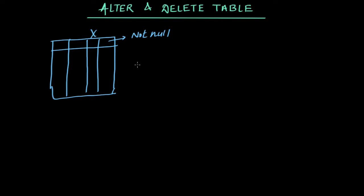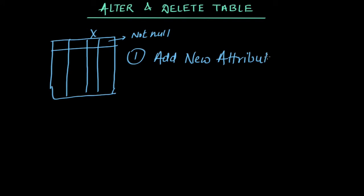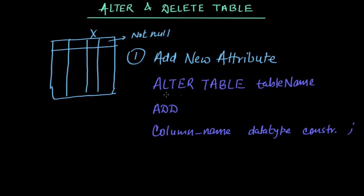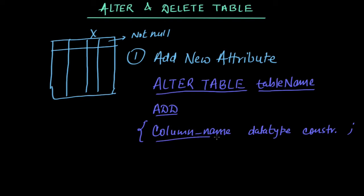The first case is: for an existing table, I want to add some new attribute. To add a new attribute, the command is: ALTER TABLE table_name ADD column_name data_type constraint. This is similar to what we used when creating a table.